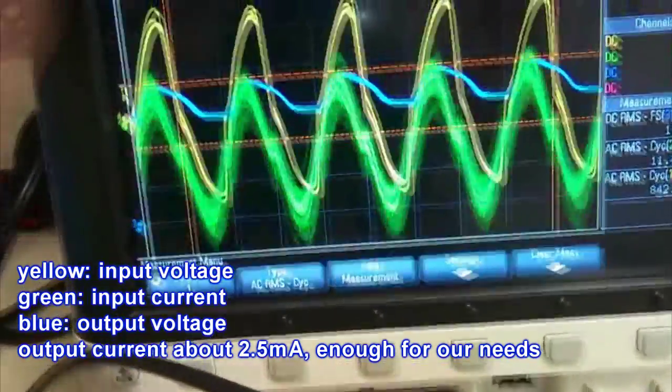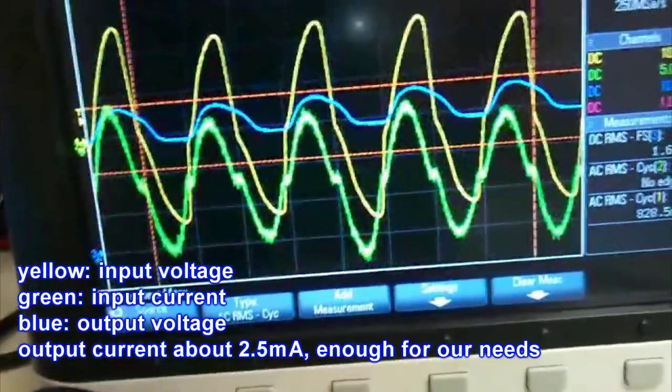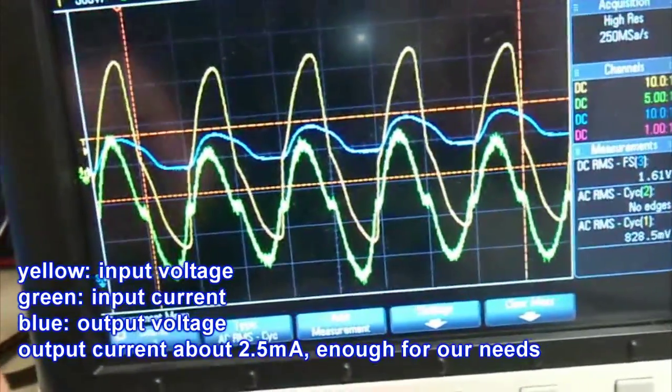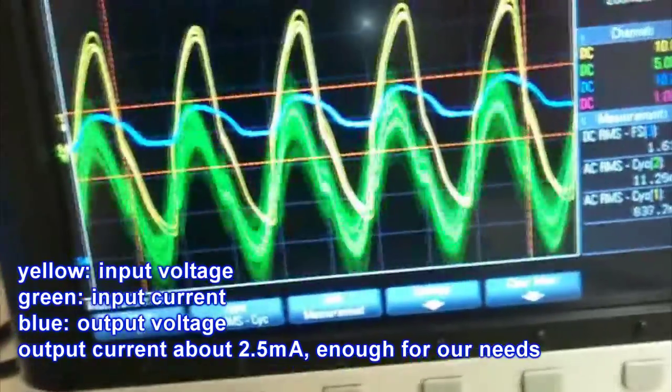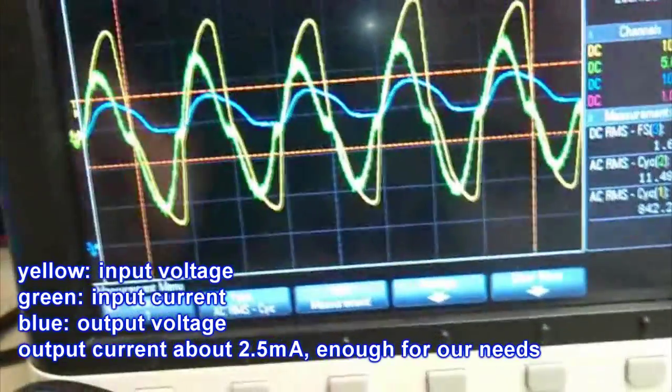The input voltage gets increasingly distorted when the output current goes up. At full power we have about 11 milliamps input RMS current and about 0.842 volts input RMS voltage.